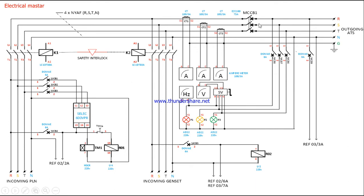When the load breaker is manually closed, it connects to the outgoing loads. Similarly, the DG supply is connected to the K2 magnetic contactor. Whenever K2 is energized, the supply goes to MCCB1, and from MCCB1, when manually closed, it goes to the load. Here we are making an interlock between the electricity contactor and the generator contactor — only one contactor can be active at a time, either the DG contactor or the main contactor.